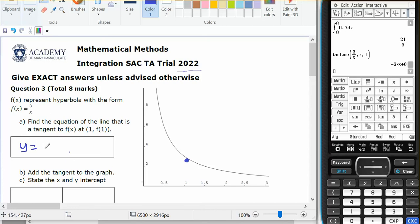So I need to write y equals minus 3x plus 6. Add the line, so I'm going to...